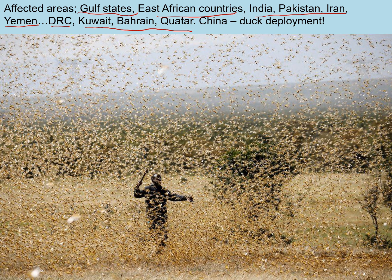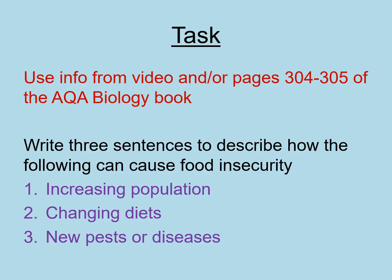To combat locusts, people are trying to spray pesticides — chemicals that kill insects — but there aren't enough aircraft or pesticides to keep up with the sheer numbers. One approach is that China is sending experts to neighboring Pakistan to deploy 100,000 ducks into affected areas. Ducks can eat up to approximately 210 locusts per day, making this a good natural method of control where pesticides are struggling to keep up.